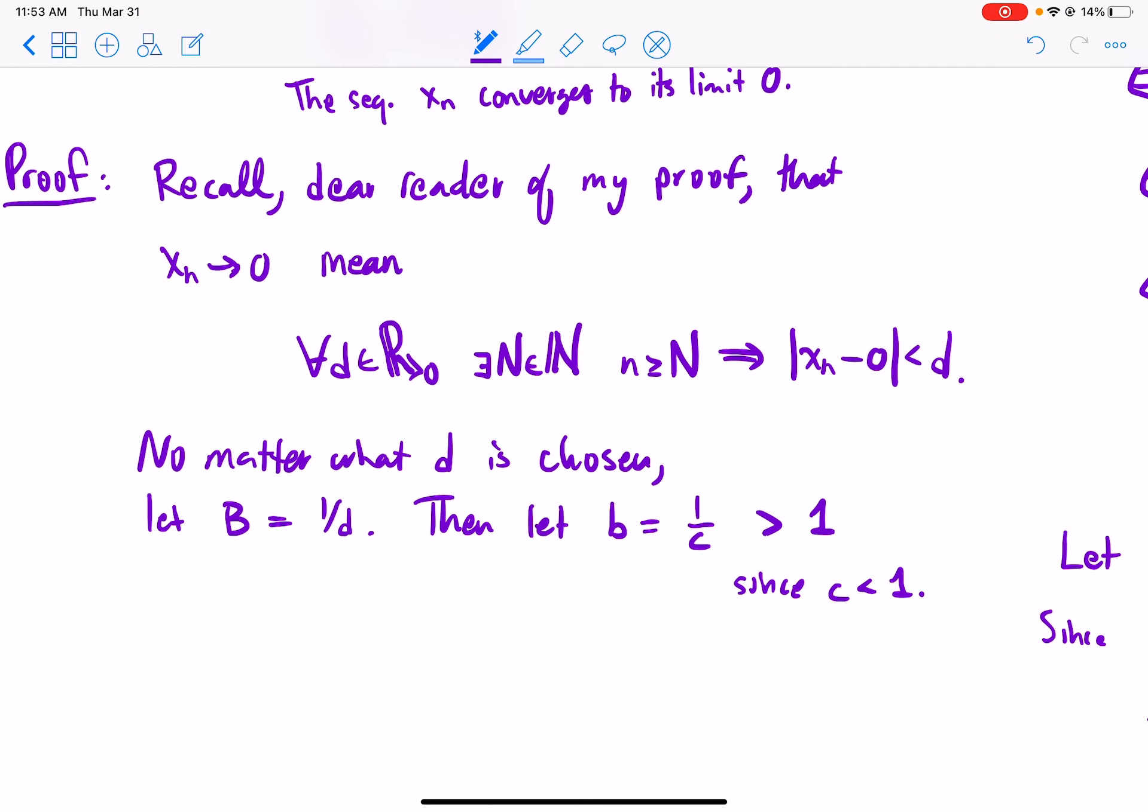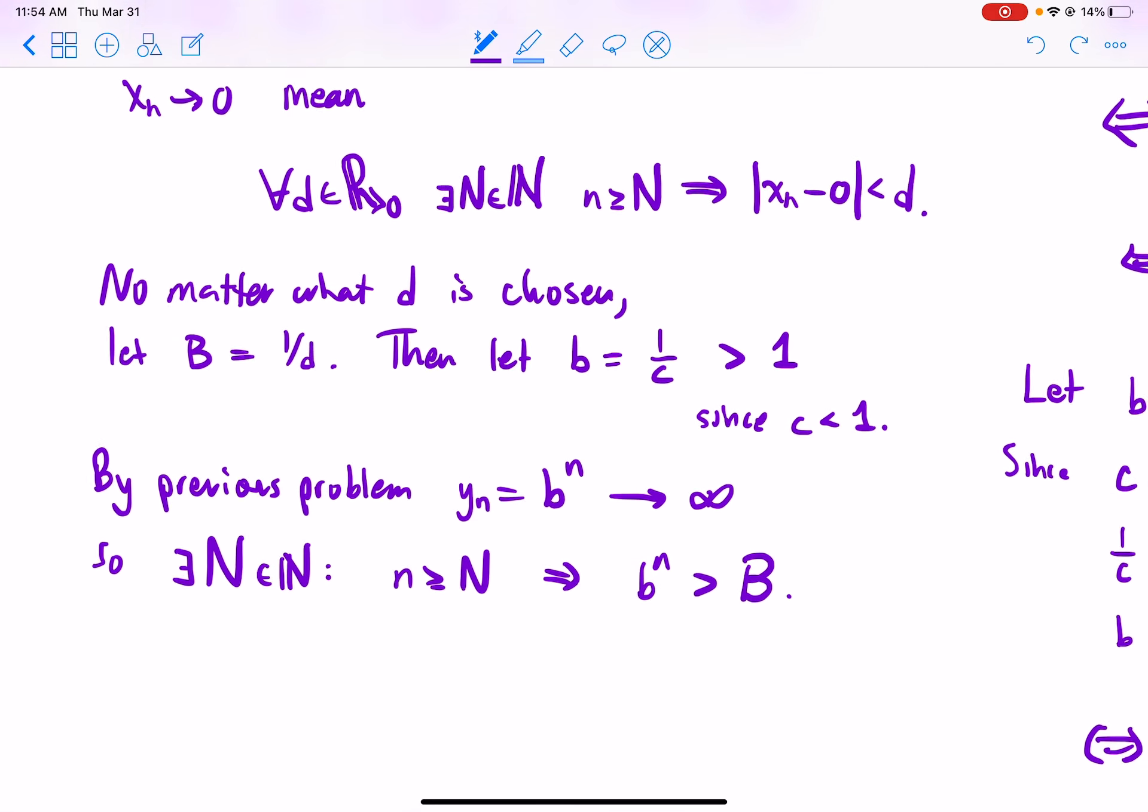I'm sort of setting it up. My previous problem, we know that the b sub n's then, the sequence now that we're forming, we could even give them a name, like the y sub n defined to be b to the n, go to infinity. So there exists a capital N such that going past n implies b to the n is greater than anything, anything we chose in particular capital B.